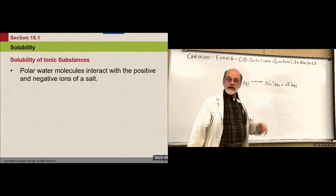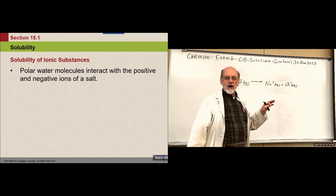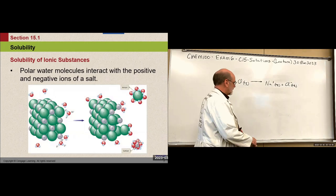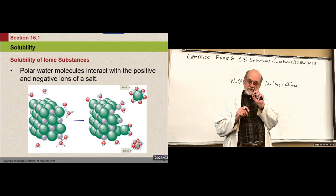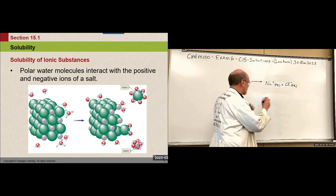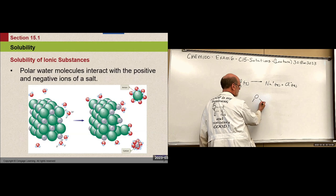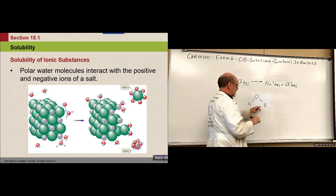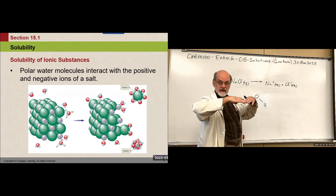Now, how is it that water can do that? Well, water is a polar molecule. If you could see individual molecules of water, there's the oxygen bound to hydrogen atoms, and it's not straight — it's bent.